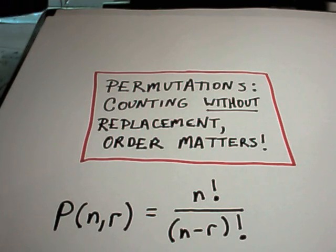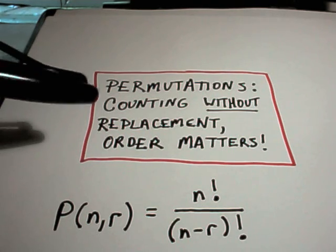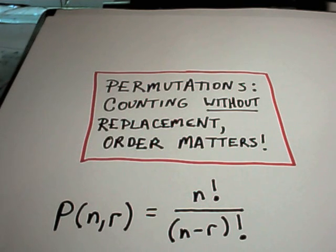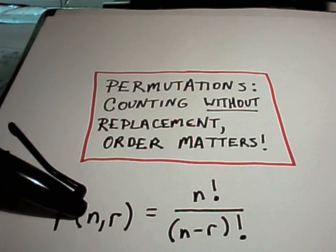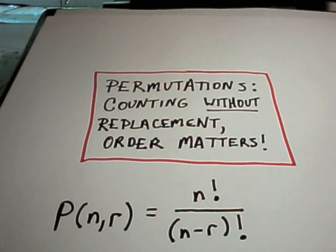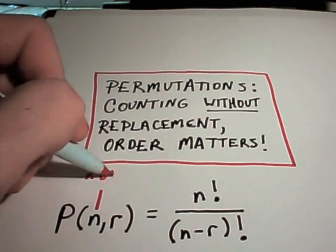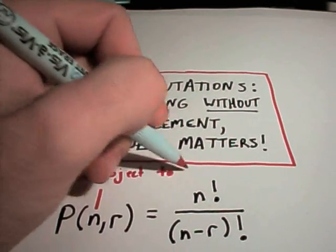The basic formula for permutations involves factorials. If you need to see some factorial stuff, we'll practice some here and I've also got some other videos with that. But it basically says if you have n objects to choose from, so that's what the n means, you have n objects to choose from.